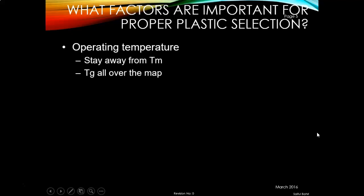It means that material selection is a very important and crucial method when you want to design a product. You need to choose the right material for a certain application. What factors are important for proper plastic selection? The first factor is the operating temperature. Plastics exhibit two properties that can occur over long-term loading — creep and stress relaxation. The operating temperature should stay away from the melting temperature or glass transition temperature.